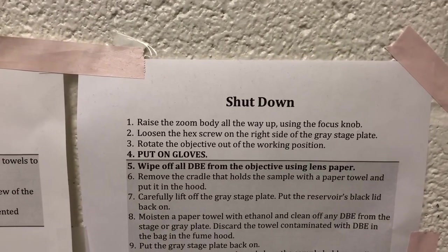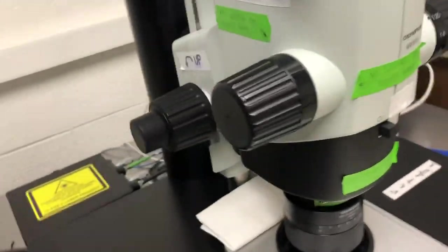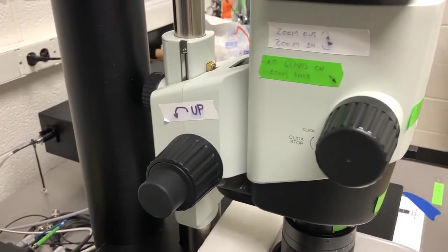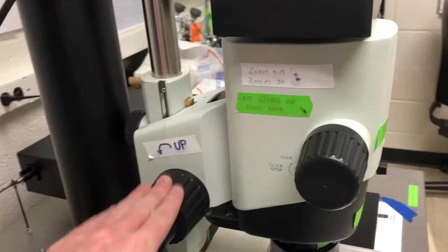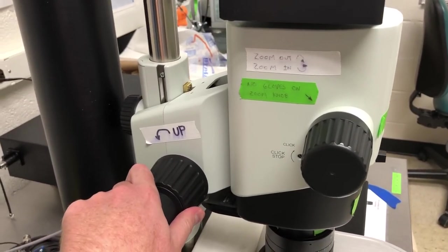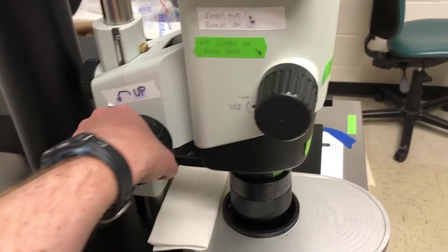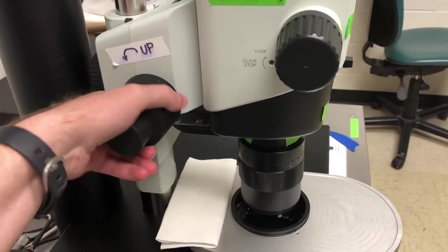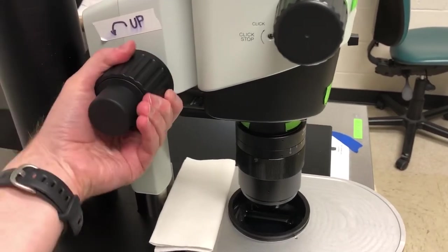First we need to raise the zoom body all the way up using the focus knob. The zoom body is this part of the microscope and we want to go up, so this is a place where we have to be careful. We don't want to slam into the sample. That's why we have this here that shows you which direction you need to go to go up. So we're going to rotate that as it says there and you can see the objective comes out of the solution.